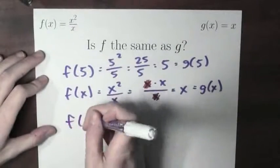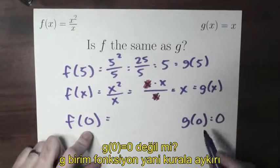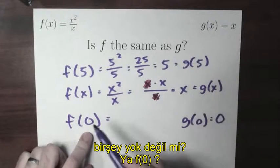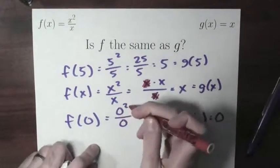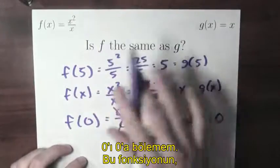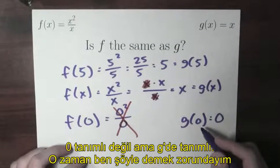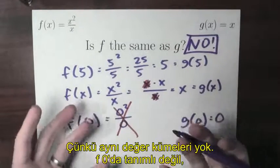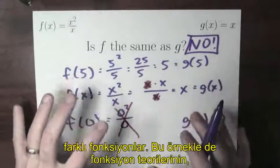What happens if you plug in 0? What's f of 0? I know what g of 0 is — g of 0 is 0, and 0 is in the domain of g, because 0 makes sense for that rule. But what's f of 0? That would be 0 squared over 0. You see, this is terrible — I cannot divide by 0. The rule x squared over x doesn't make sense when x equals 0. So 0 is not in the domain of f, but it is in the domain of g. Therefore these are not the same function. They don't have the same domain — f isn't defined at 0, and g is defined at 0, so these are really different functions.